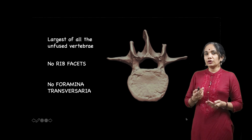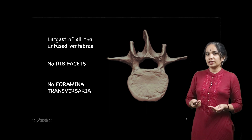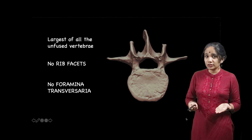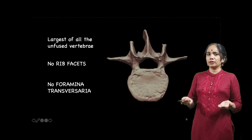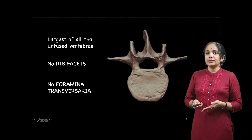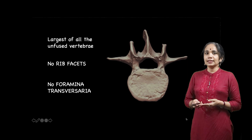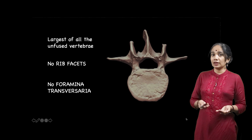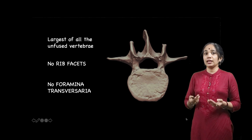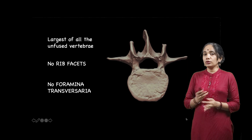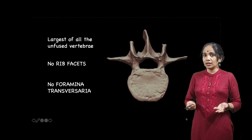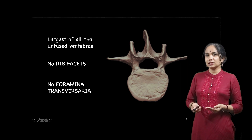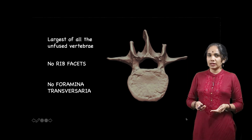Since you have already learned about the thoracic and cervical vertebrae, the lumbar is different from them in that it is not attached to the ribs at all, so it has no rib facets — not even one. And since there is no vertebral artery traversing through it, it has no foramen transversarium. So if you get a large vertebra with no rib facets and no foramen transversarium, you can confirm that it is a lumbar vertebra.